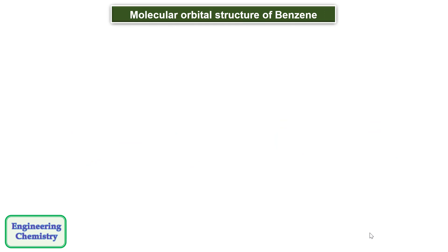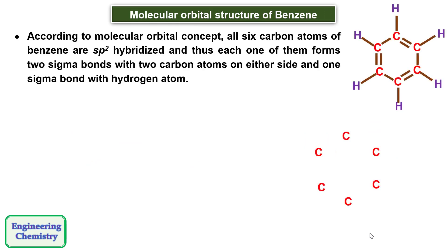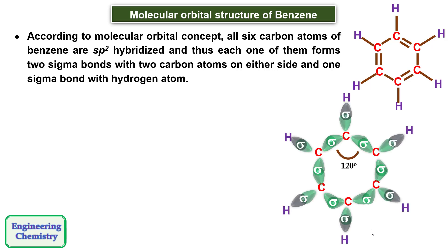Let's understand the molecular structure of benzene. According to molecular orbital concept, all the six carbon atoms of benzene are sp2 hybridized and thus each one of them forms two sigma bonds with two carbon atoms on either side and one sigma bond with hydrogen atom.